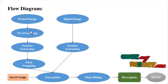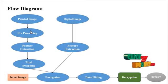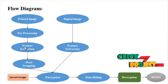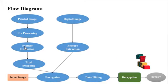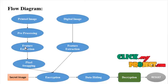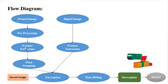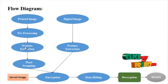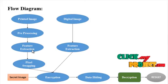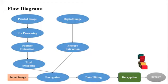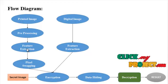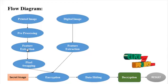In the feature extraction process, this involves reducing the amount of resources required to describe a large set of data when performing analysis of complex data. One of the major problems stems from the number of variables involved. Feature extraction is a general term for methods of constructing combinations of variables to describe the data with sufficient accuracy. In our process, feature extraction is carried out by binarization of the natural share, calculated with respect to the median value.